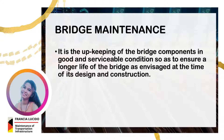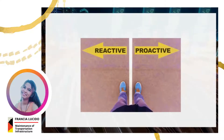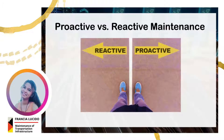Even if bridges are well designed and properly constructed, they must be properly monitored and maintained on a regular basis to ensure that they remain in good working order and can last as long as they were intended. There are two distinct types of approach with regards to bridge maintenance: the first one is proactive and the other one is reactive. Fundamentally, proactive maintenance might be described as the opposite of reactive maintenance. Here is the difference.